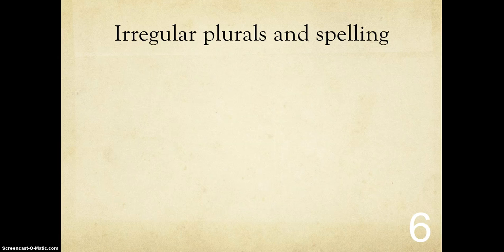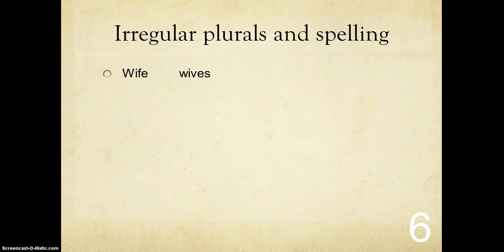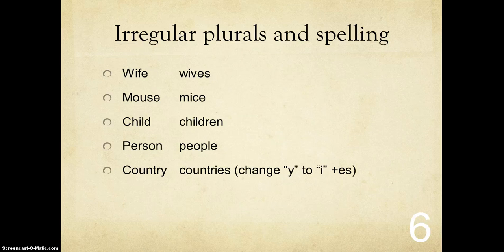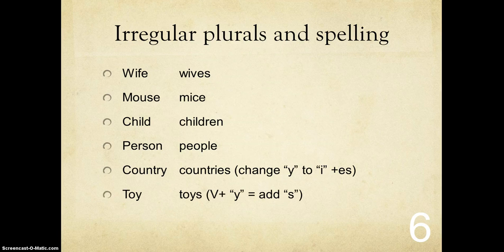There are irregular plurals and spelling. Wife becomes wives — so I-F-E becomes I-V-E-S. Mouse is mice — that's one you just have to learn. Child, children. Person is people. Country becomes countries — so if I have a consonant in front of the Y, I change the Y to I and add ES. And if I have a vowel in front of the Y, I just add S.